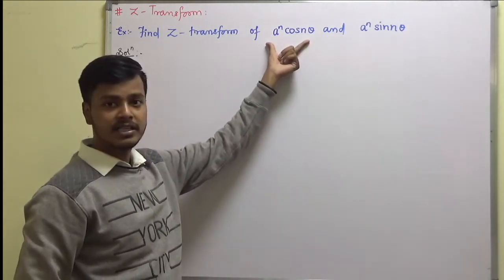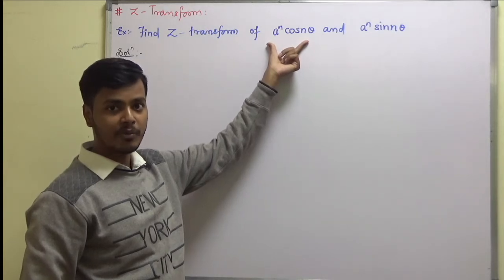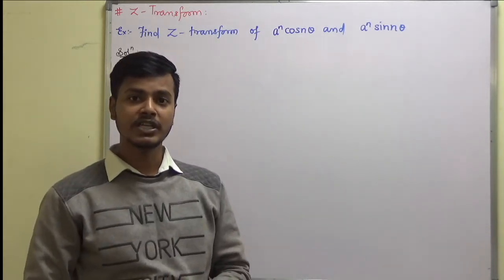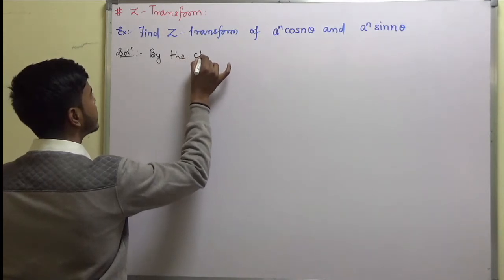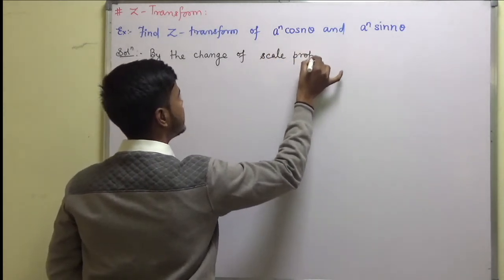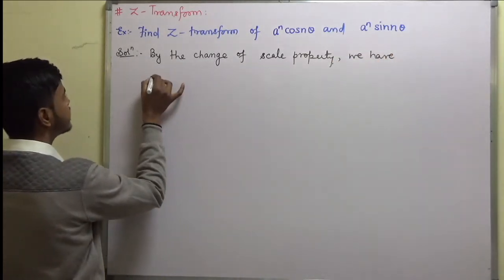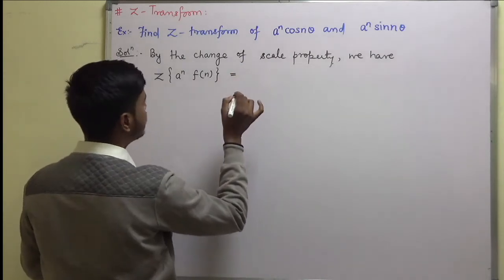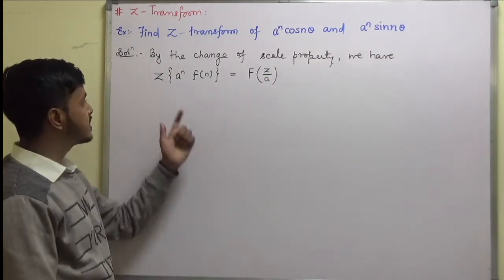The moment you look at this sequence, the thing that strikes your mind is the change of scale property, because we have a to the power n into f of n. So in this problem we are going to make use of the change of scale property. By the change of scale property, we have: Z transform of a to the power n into f of n is equal to F of z by a.